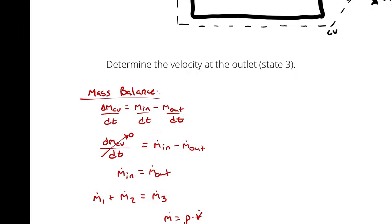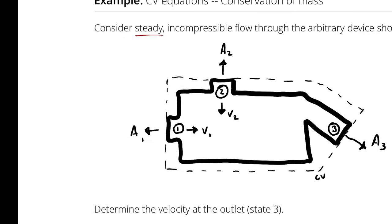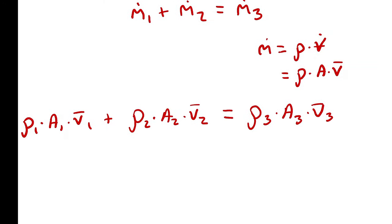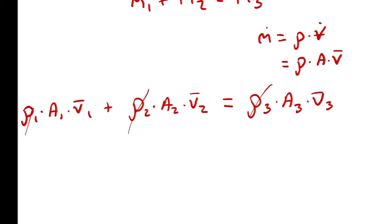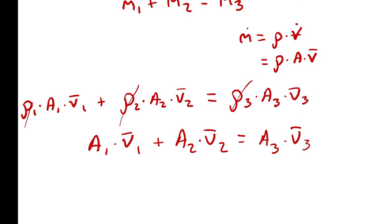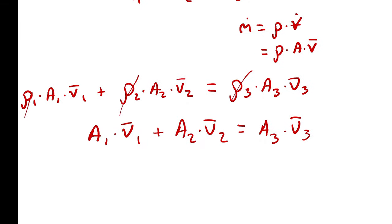I note that I have incompressible flow. Incompressible flow means density is assumed to be constant. I don't have to list that as an assumption because it was part of the problem statement. Since density is the same at all three state points, dividing by density yields: A₁V̄₁ + A₂V̄₂ = A₃V̄₃. It's important to note that this comes out as a result of conservation of mass simplified for incompressible flow — there is conservation of mass, but not a law of conservation of volumetric flow rate.